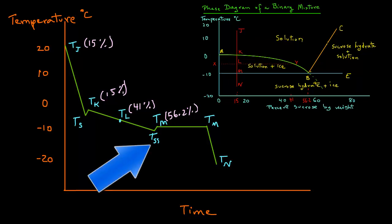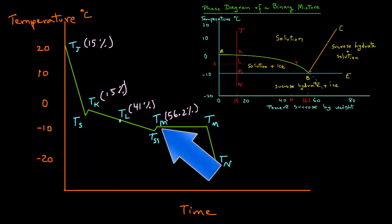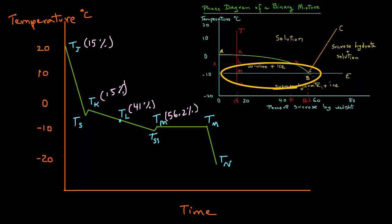TSS denotes the temperature where there is supersaturation of sucrose. Supersaturation occurs just prior to crystallization of the solute, which in our case is sucrose. The heat of crystallization again raises the temperature to TM, the eutectic point. When the system temperature reaches TM, the solution now is at a stable equilibrium, and the concentration of the fluid phase is determined by the eutectic value of 56.2%, as shown by point B in the phase diagram for this binary mixture. Note that this value is read by following the horizontal line from M to point B on the phase diagram.